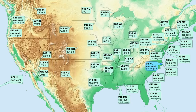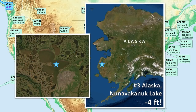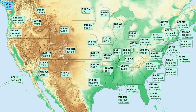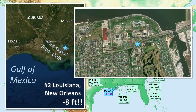The next three are very special low points that actually fall below sea level. Number 3 is Alaska — an interesting remote lake feature in the periglacial terrain of eastern Alaska on the Yukon River Delta, four feet below sea level. Number 2 is Louisiana, in New Orleans, a historic city setting highly susceptible to flooding, especially during hurricane storm surges, at eight feet below sea level.